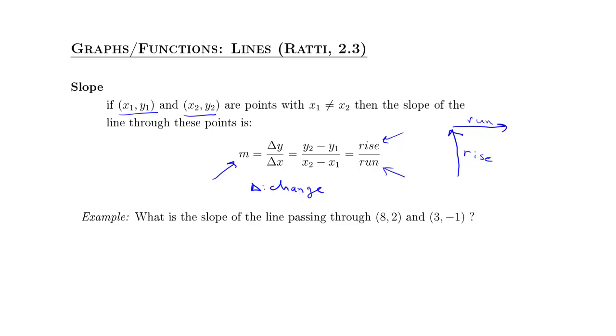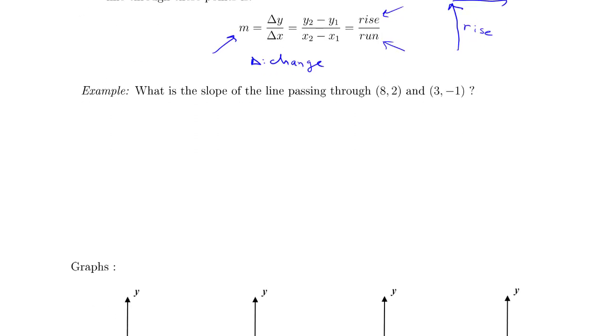Let's see a simple calculation. What is the slope of the line passing through (8, 2) and (3, -1)? I could consider this first one to be (x₁, y₁) and the second one to be (x₂, y₂), so I could do my slope as y₂ minus y₁ over x₂ minus x₁.